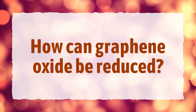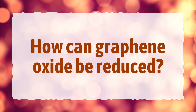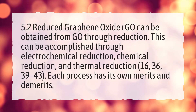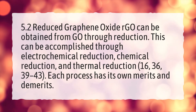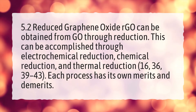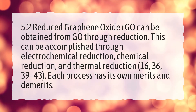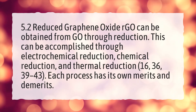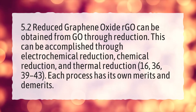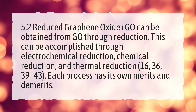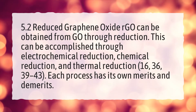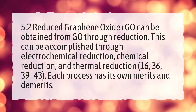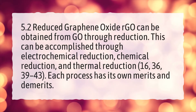How can graphene oxide be reduced? 5.2 Reduced Graphene Oxide. RGO can be obtained from GO through reduction. This can be accomplished through electrochemical reduction, chemical reduction, and thermal reduction [16, 36, 39–43]. Each process has its own merits and demerits.